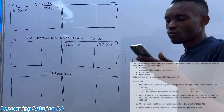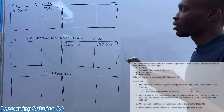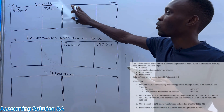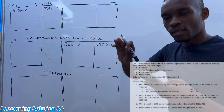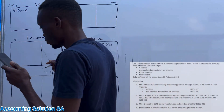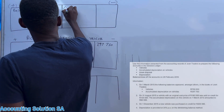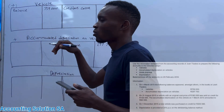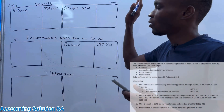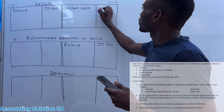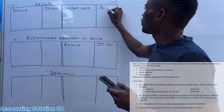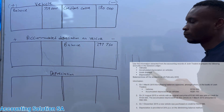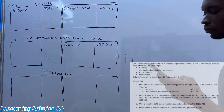The opening balance for accumulated depreciation will come on the credit side — a balance of 297,750. Then on 31 August, a vehicle with an original cost price of 180,000 was sold on credit. We need to recognize that cost on the credit side to indicate the vehicle will no longer be held. Since it was sold on credit, we record creditors control on the debit side with 180,000.